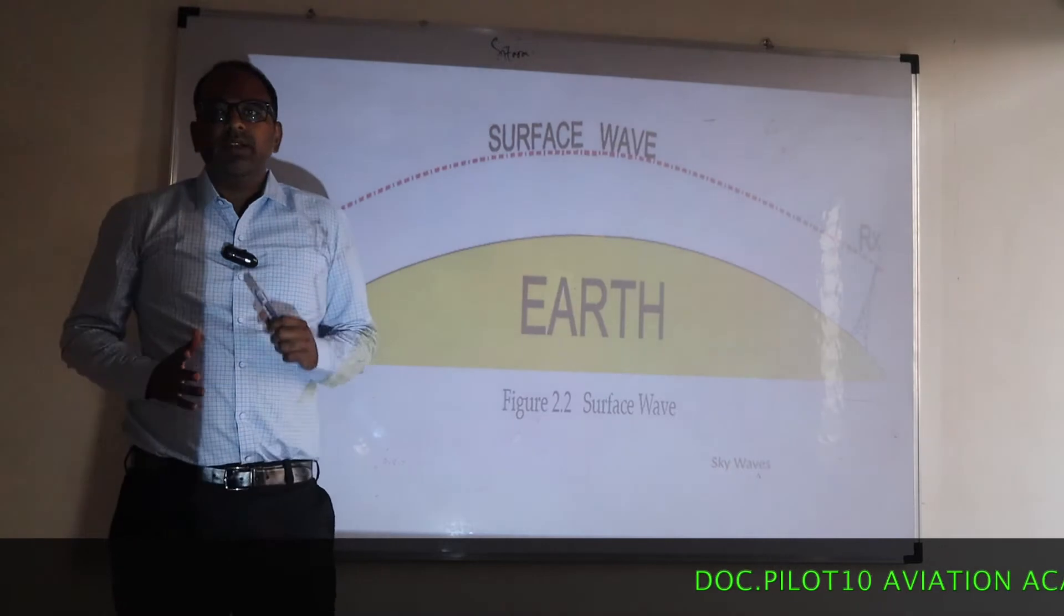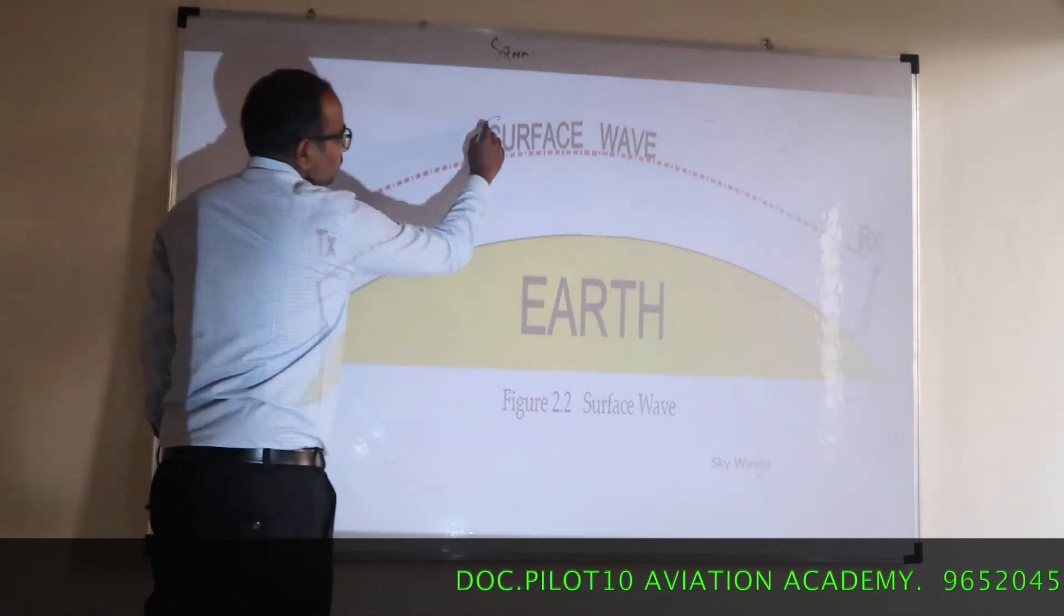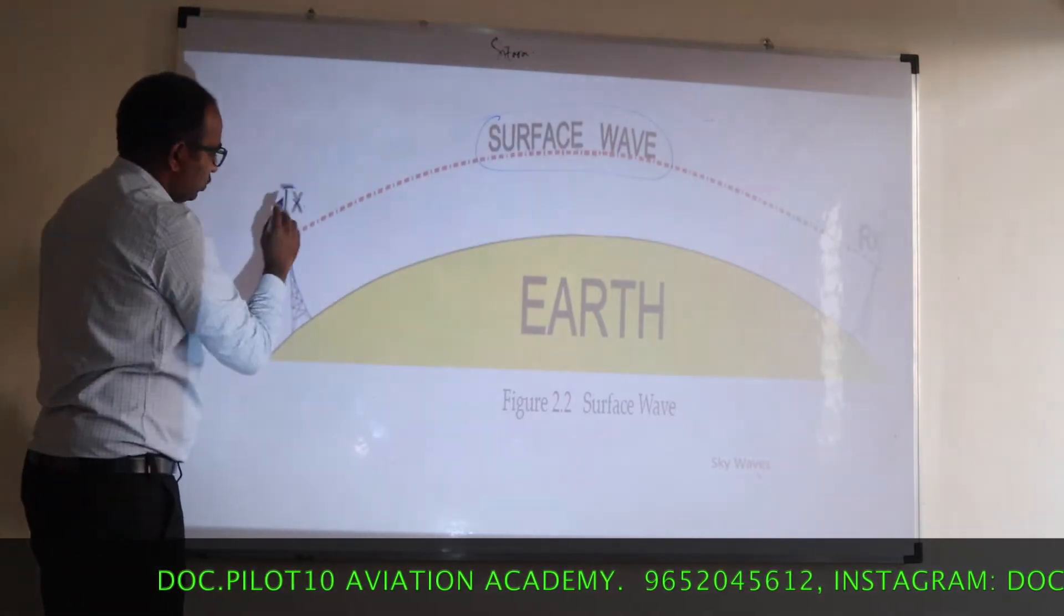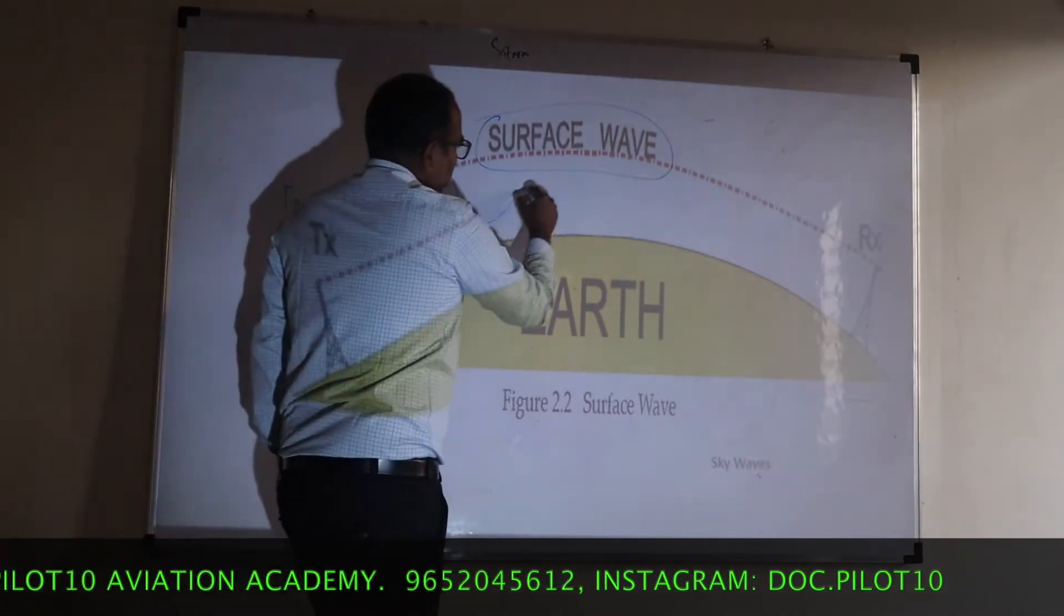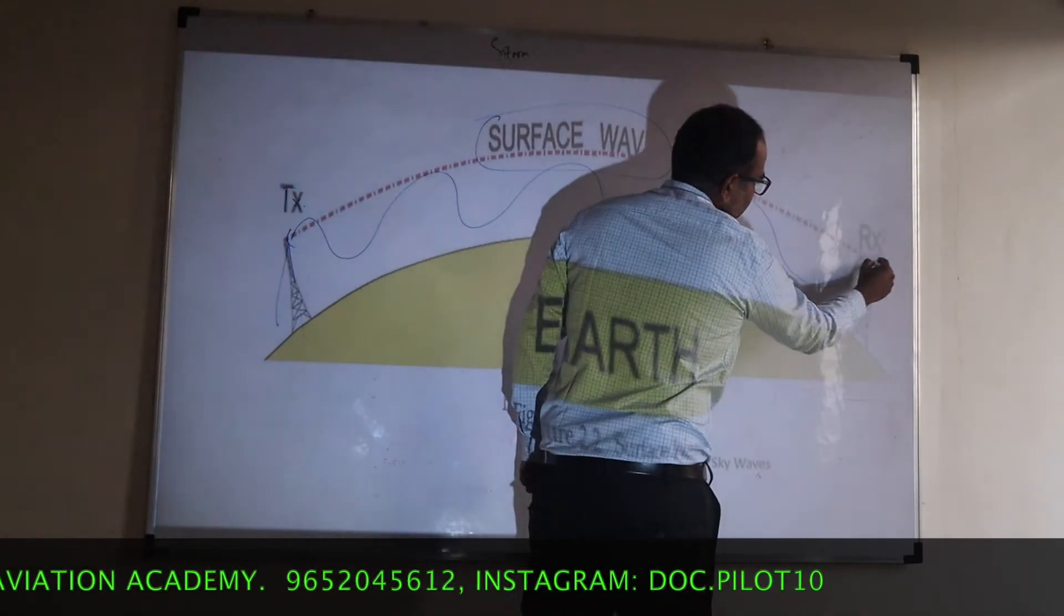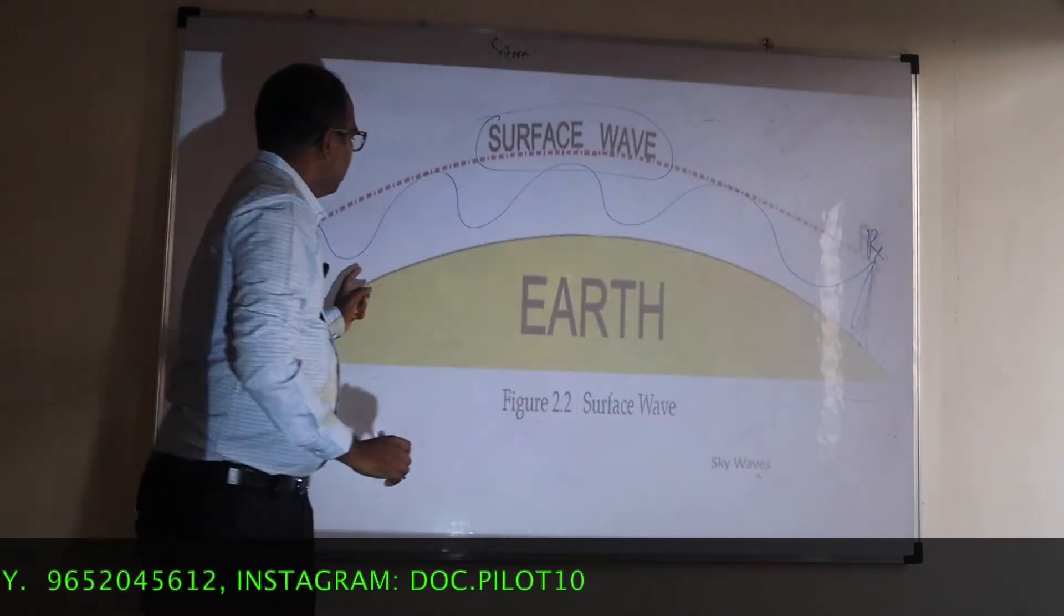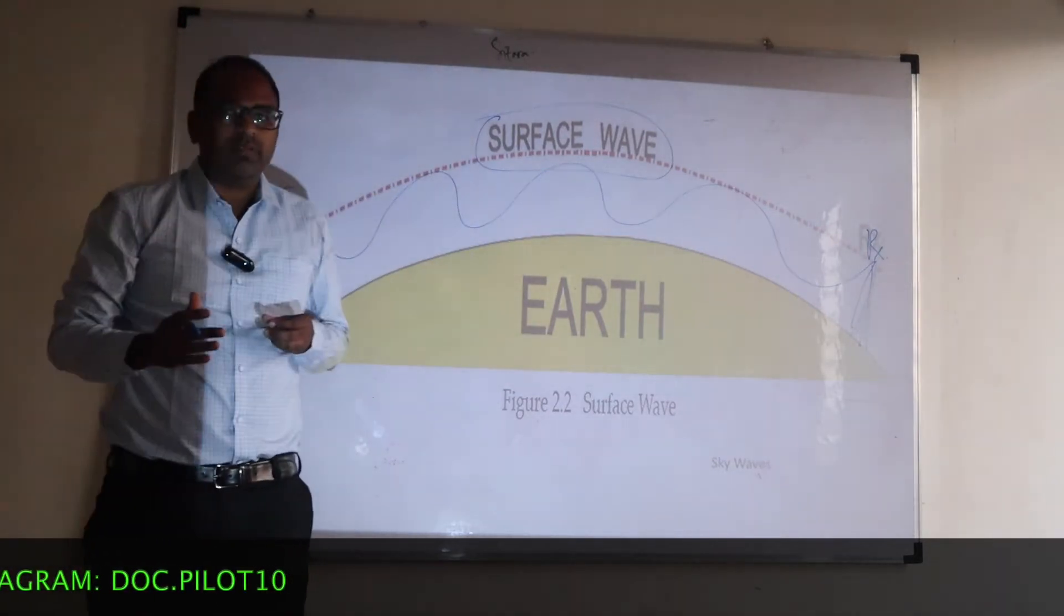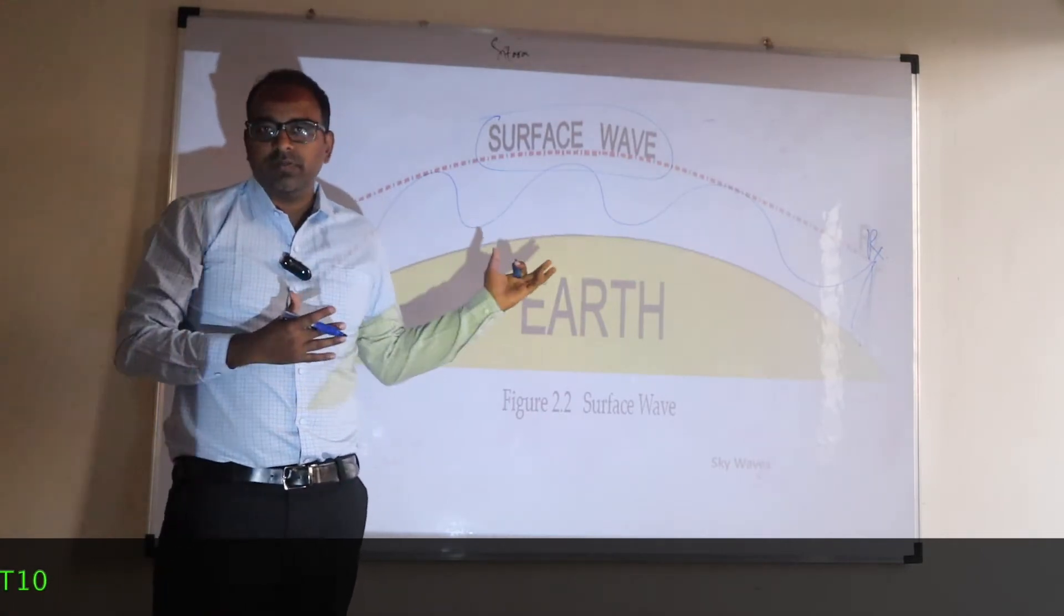Initially when the radio magnetic waves were discovered, they used surface waves. There used to be a transmitter on the ground, which used to produce a surface wave, which traveled along the curvature of the earth and was received by a receiver. This traveling along the curvature of the earth is due to the property of diffraction of surface waves. I am not going into details of the characteristics of these waves.